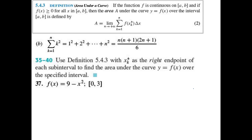From there we went on to: how do you get better approximations? More rectangles. By taking the limit as n goes to infinity. The definition of the area under a curve: if f is continuous on [a, b] and f of x is greater than or equal to zero for all x in [a, b], then the area A under the curve y equals f of x over the interval [a, b] is defined as the limit as n goes to infinity of that Riemann sum.